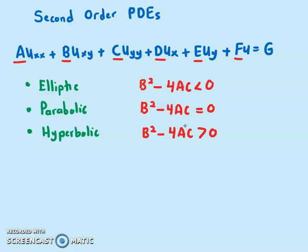It is important to identify the type of PDE. To solve this second order PDE, what we want to do is transform the equation to a simpler form so that we can integrate using either separable variables or any simpler integration method.